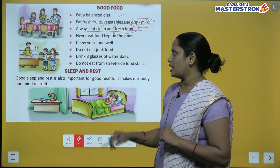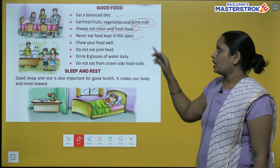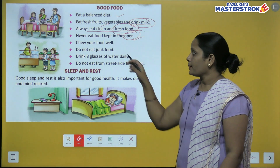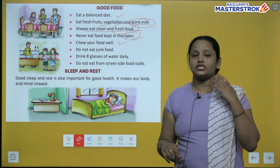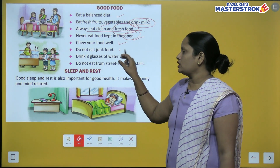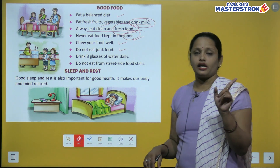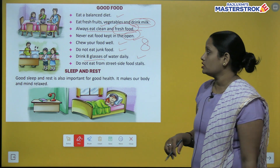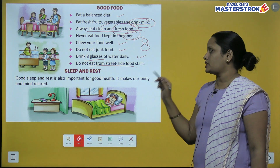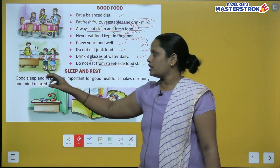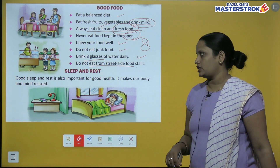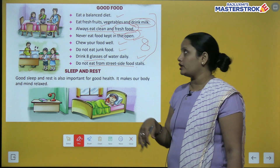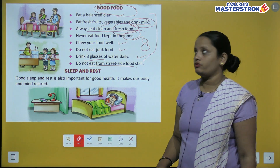Never eat food kept in the open — agar bahar koi khana rakha hua hai, toh use khule mein kabhi bhi na khaein. Chew your food well — apne khane ko achhe se chaba chaba ke khaein. Do not eat junk food. Drink eight glasses of water daily. Do not eat from street-side food stalls — wahan se jaake nahi khana chahiye, warna hum bimar ho jayenge.